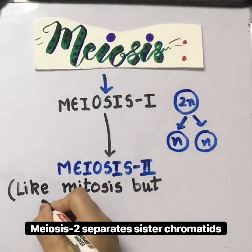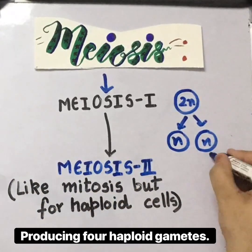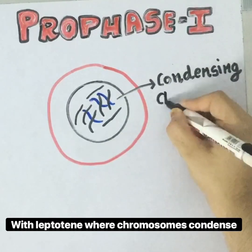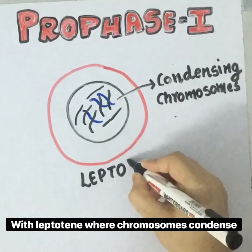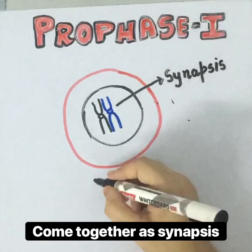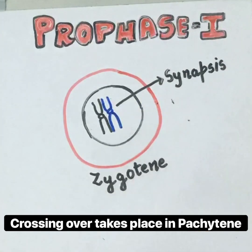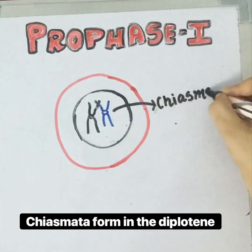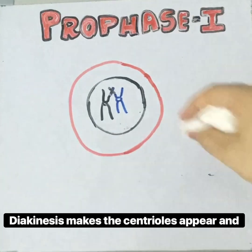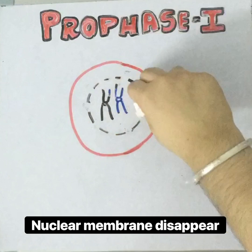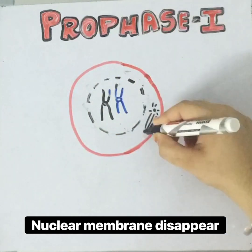Meiosis two separates sister chromatids, producing four haploid gametes. Meiosis one begins with prophase one: leptotene, where chromosomes condense; zygotene, where homologous pairs come together in synapsis; crossing over takes place in pachytene; chiasmata form in diplotene; and diakinesis, where centrioles appear and the nuclear membrane disappears.